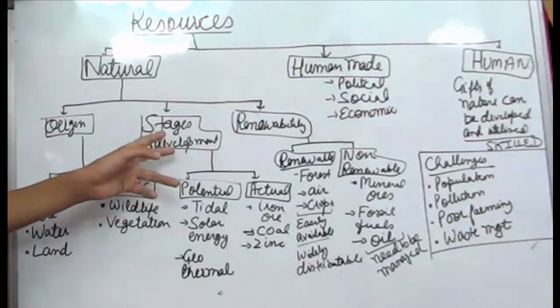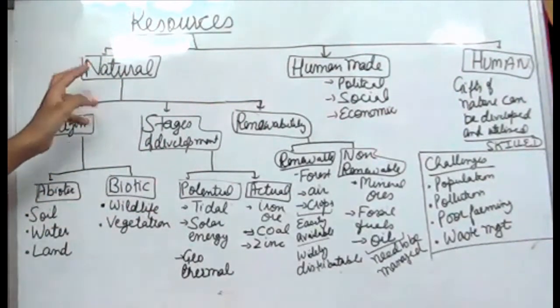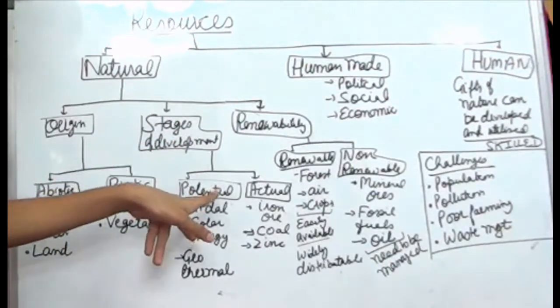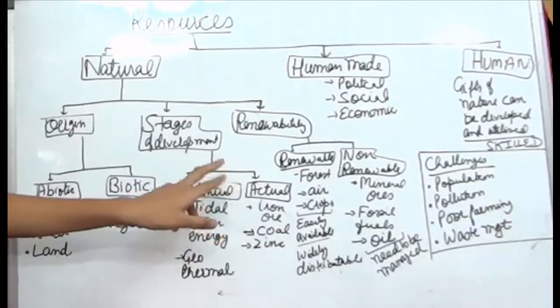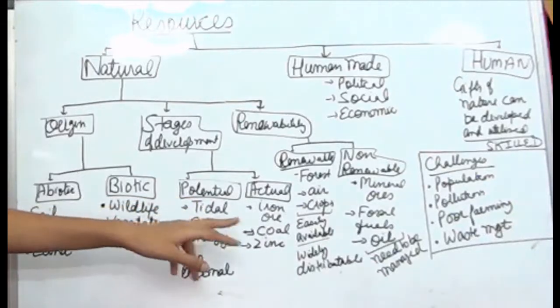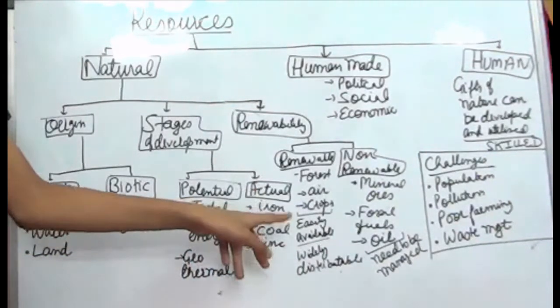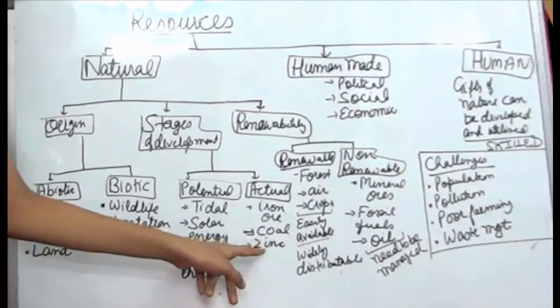Next, stages of development. Stages of development can be further divided into potential and actual. Potential resources are tidal, solar energy, and geothermal. Actual resources are iron ore, coal, and zinc.